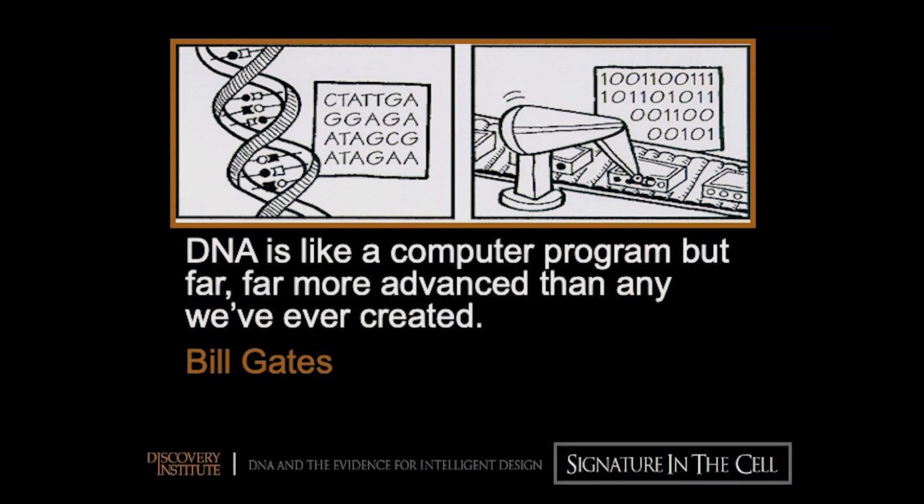Bill Gates has said that DNA is like a software program, but much more complex than any we've ever created — and he's absolutely right. But software comes from a programmer, and written text comes from writers. So when we find this type of information known as specified complexity inside a living cell, we're very justified in inferring that a designing agent played a role.